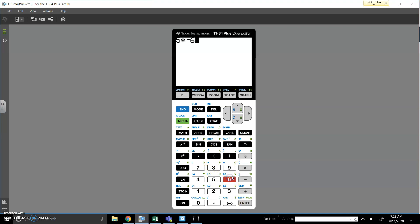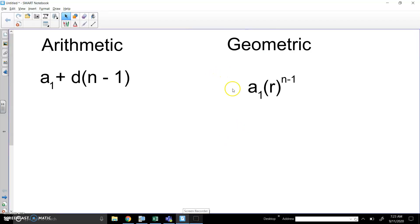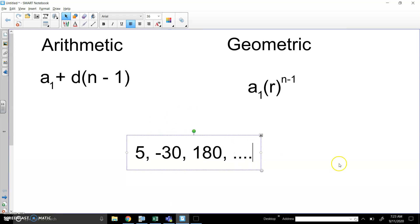So let's try that. 5 times negative 6 is negative 30. Multiply that by negative 6, and you get 180. So if I take the second number and divide by the first number, you are getting what's called the common ratio. And so I'm going to be using this particular formula here.